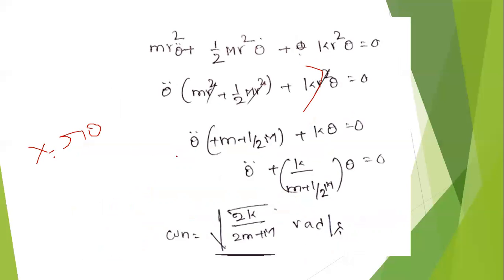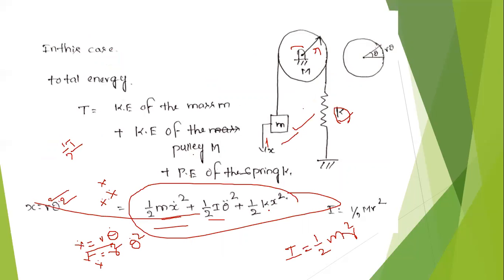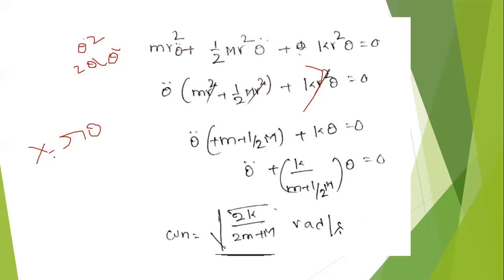Differentiating with respect to t: R²·θ̇². M·R² is a constant. Differentiating θ̇² equals 2·θ̇·θ̈. Next equation: we get ½·K·X². Since X = R·θ, X² = R²·θ², and R² is constant, differentiating θ² gives 2·θ·θ̇. The resulting equation: ½·M·R²·θ̇² term, plus ½·M·R²·θ̇², plus K·R²·θ. Taking θ̇ as common: M·R² + ½·M·R² + K·R²·θ = 0. Simplifying, θ̇ is common: (M + ½M)·θ̈ + K·θ = 0.